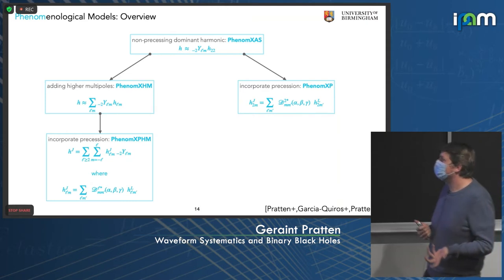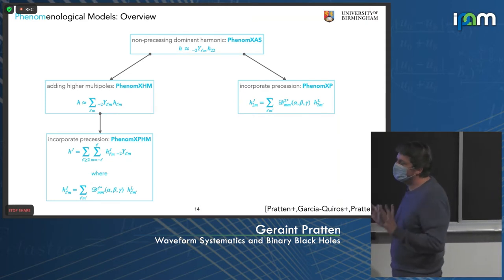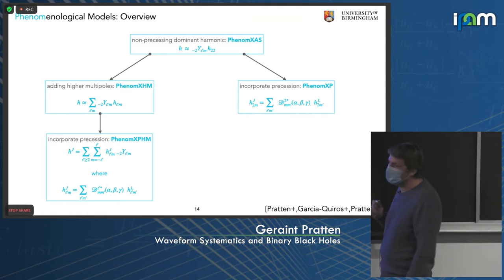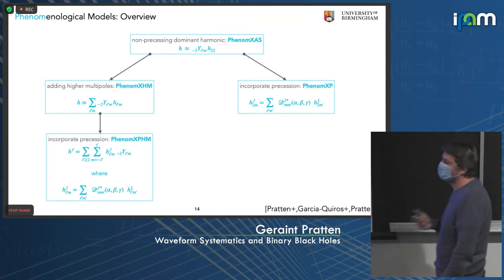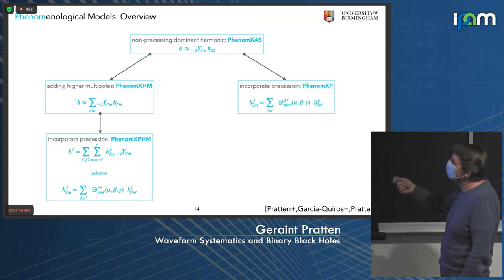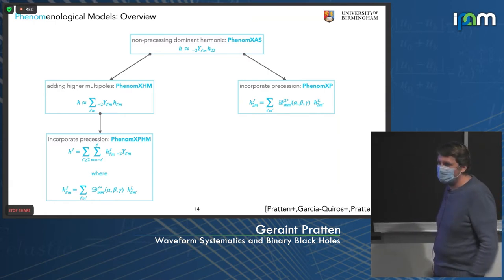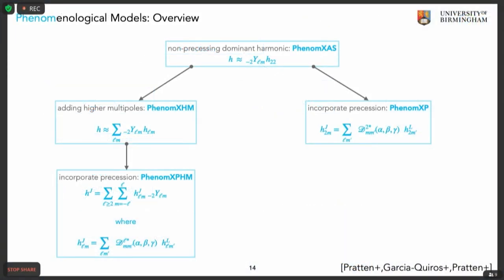We've always focused first on the non-precessing dominant harmonic — it's much easier to span this parameter space since we have a lot of accurate NR simulations. This gives us PhenomXAS, where AS stands for aligned spin, which is just the dominant harmonic. If we then incorporate precession, modeling the time-dependent rotation of the orbital plane and the spins, we can have a precessing model PhenomXP. Or we can first introduce higher multipoles and then incorporate precession to get a model with both precession and higher multipoles.